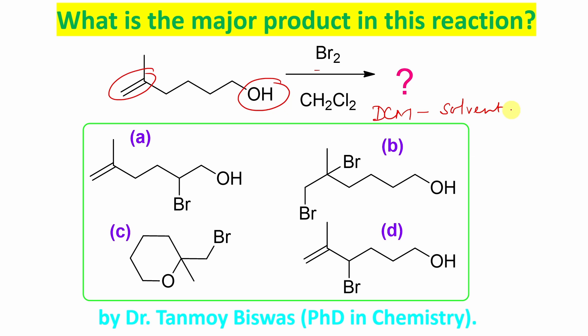Now, two types of functional group exist: alkene versus OH. Which one will react with bromine? Obviously alkene. Why? Because remember, oxygen is an electronegative atom, and the bromine-electronegative atom bond is not that much stronger.